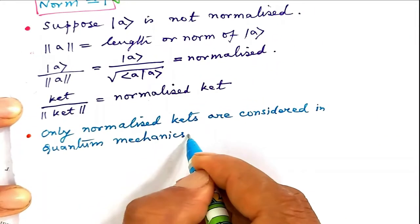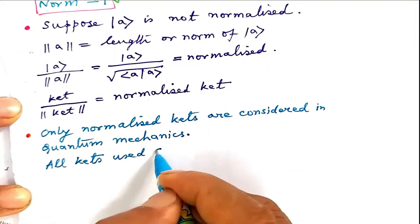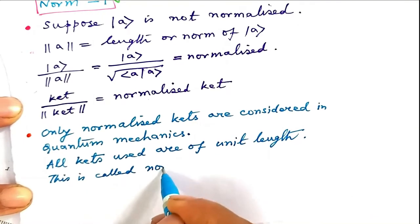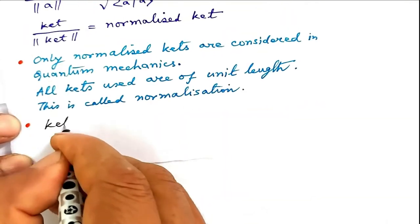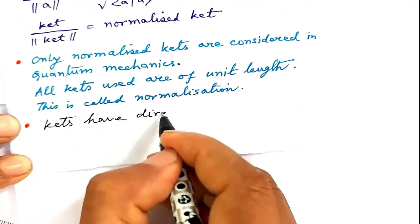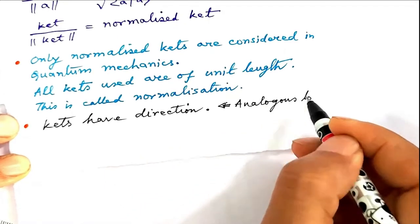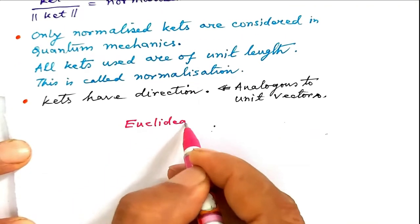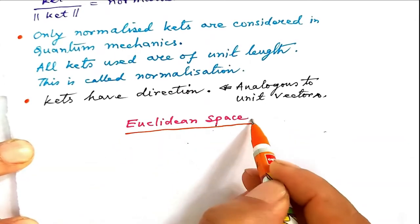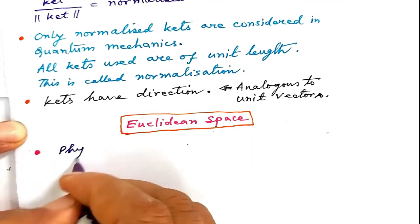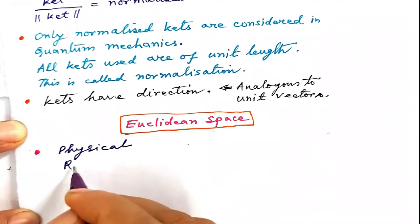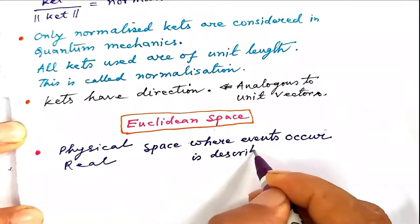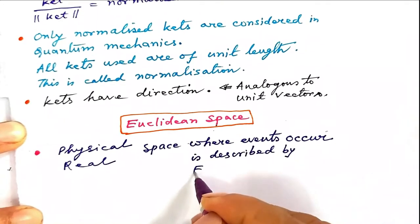All kets used are of unit length — this is called normalization. Kets have direction and are analogous to unit vectors. We now discuss what we mean by Euclidean space. A physical or real space where events occur is described by Euclidean space.